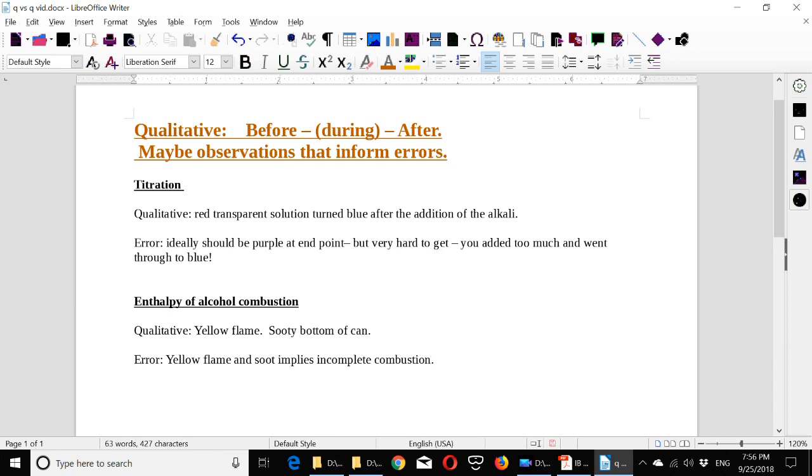So for example, in titration, if a red transparent solution turned blue when I added the alkali, well that illuminates a bit of the error there. Because ideally it should be purple when you're finished, between red and blue. But that's very hard to get—maybe only one drop will do it—so you added too much and went too far.